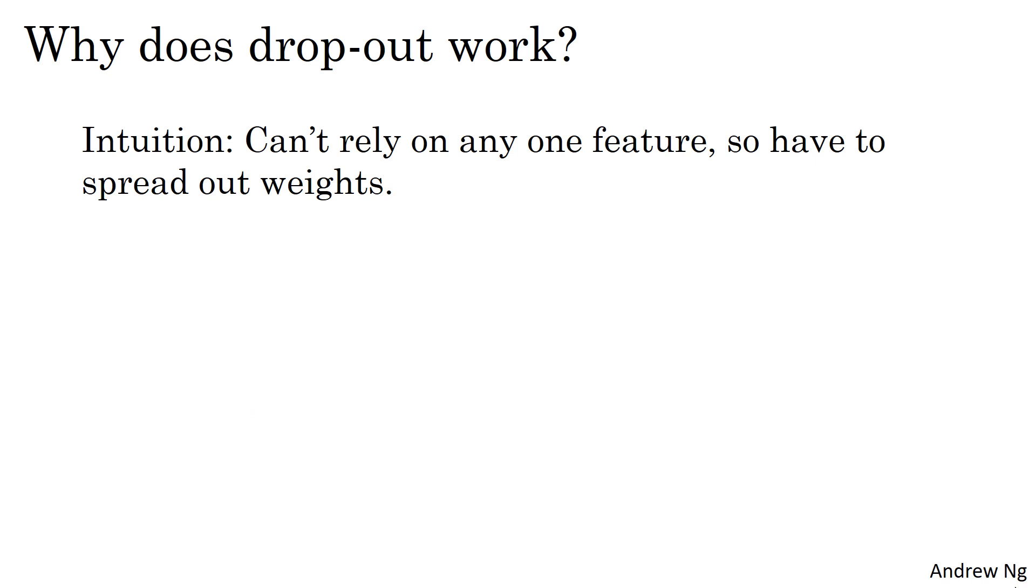In the previous video, I gave this intuition that dropout randomly knocks out units in your network, so it's as if on every iteration you're working with a smaller neural network. And so using a smaller neural network seems like it should have a regularizing effect.